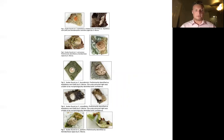The scale pictured on the right was unable to be morphologically identified with confidence. In Figure 5, we have the scales that were found on Ceanothus palmeri. Some of the scales were preliminarily identified as Hemiberlesia rapax.